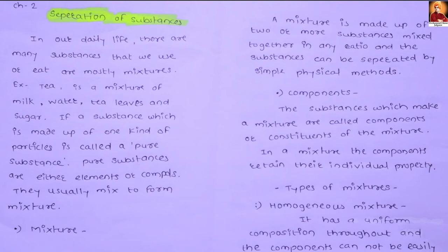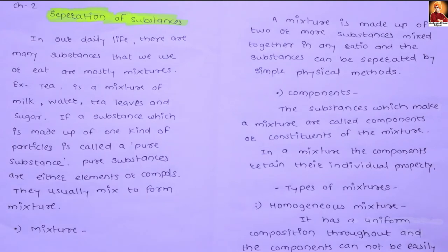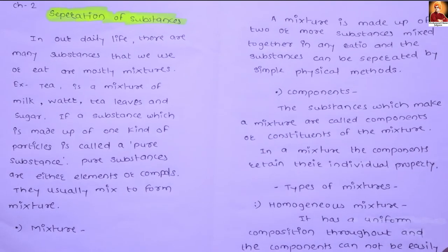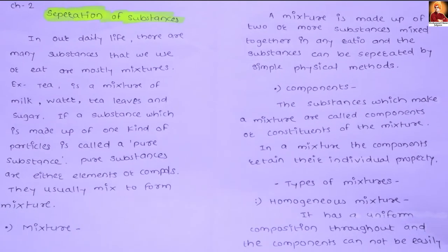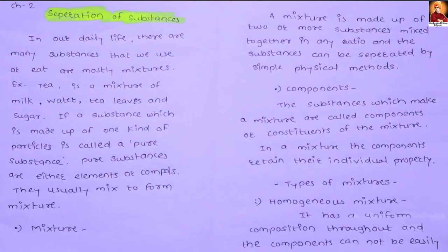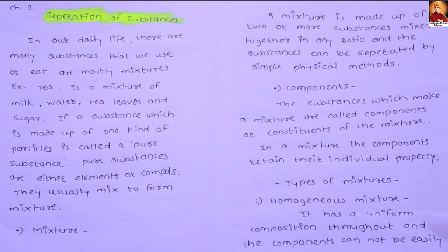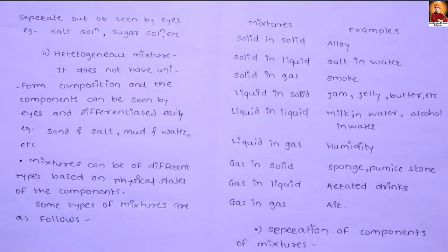What do we need to separate out the mixture? The substances which make up a mixture are called components. The types of mixture are two types: homogeneous mixture and heterogeneous mixture. A homogeneous mixture means that components are in uniform composition throughout the solution.